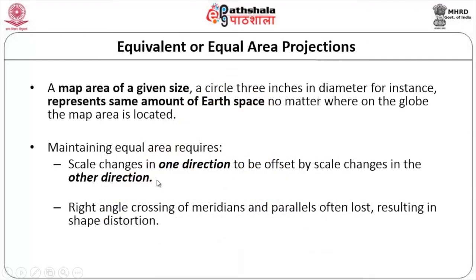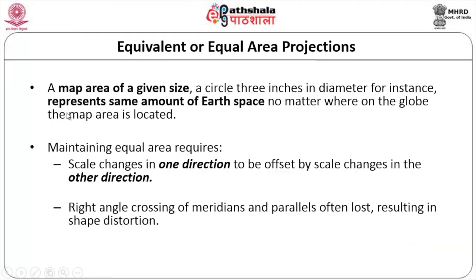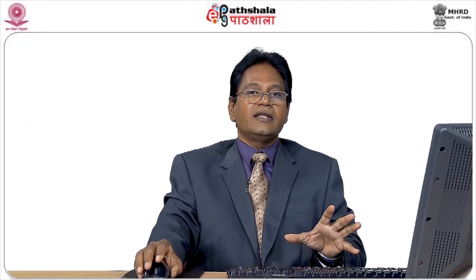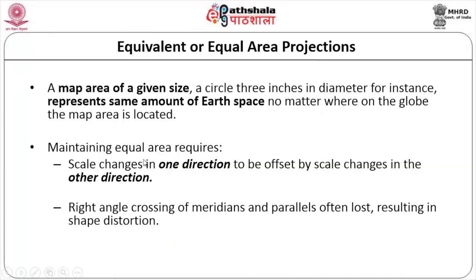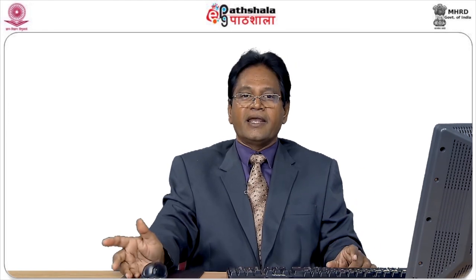Equal area or equivalent projection preserves areas — we do not worry about direction or distance. A map area of a given size, say a 3-inch circle, will represent the same amount of area on the earth's surface irrespective of where it is on the globe. To maintain equal area, scale changes in one direction must be offset by scale changes in the other direction. The right-angle crossing of meridians and parallels is often lost, resulting in shape distortion, but area is preserved.